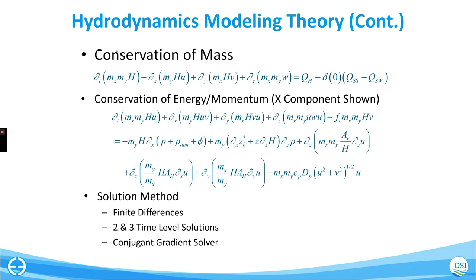The solution method is finite difference, which is a really efficient computational approach to solving these equations. It works well with the orthogonal and curvilinear orthogonal grids used by the model. It has two time level and three time level solutions. The two time level solution allows you to vary your time step — one, two, three seconds — for which periods in time will be simulated. With a three time level solution, you use a constant time step for the whole model simulation. There are benefits and disadvantages to each, and which one you use depends on your particular problem.